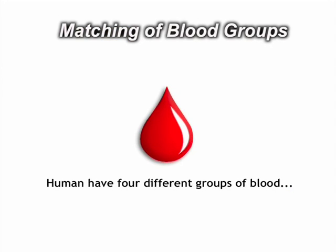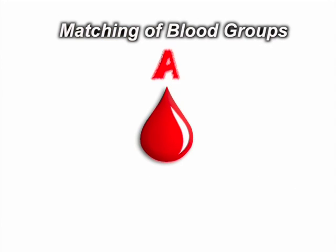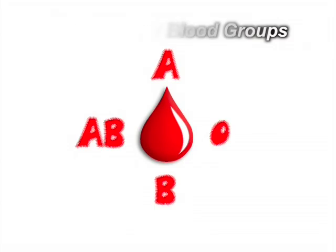Humans have four different groups of blood. They are A, B, AB and O.